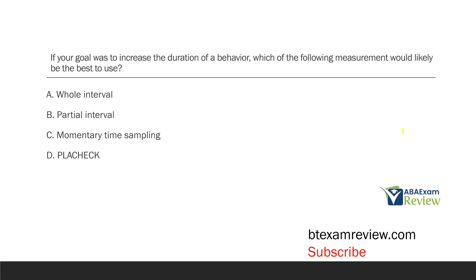If your goal was to increase the duration of a behavior, which of the following measurements would likely be the best to use? So we want to increase duration of a behavior — meaning how long that specific behavior occurred for. Which measurement would be best? We look at our answer choices: whole interval, partial interval, momentary time sampling, and placheck — all discontinuous measurements. Let's think about what each one does, because we want to increase the duration of behavior.